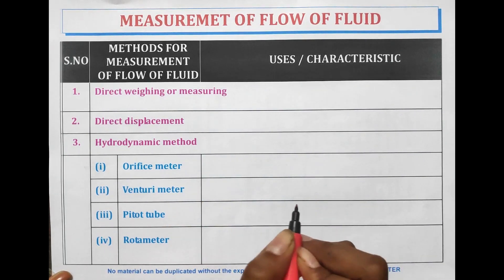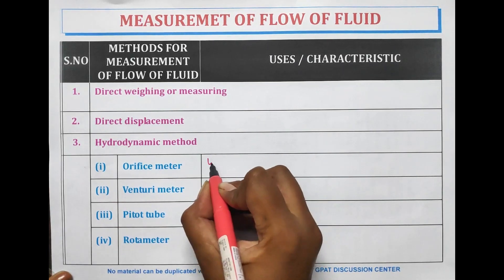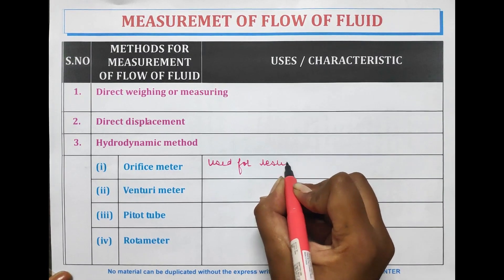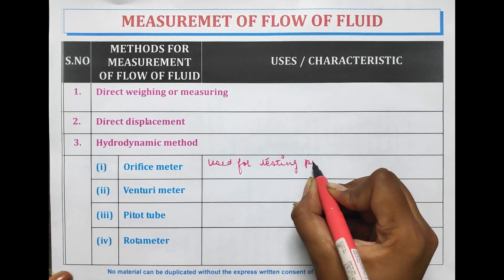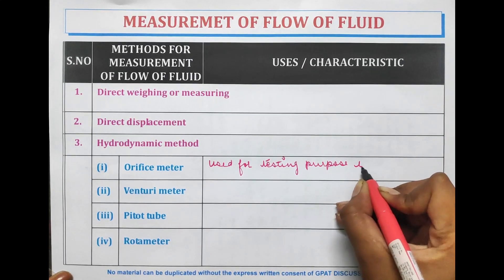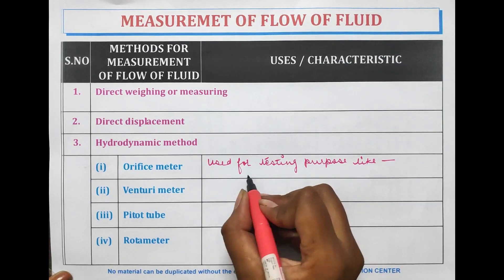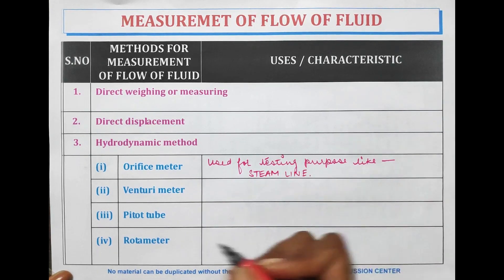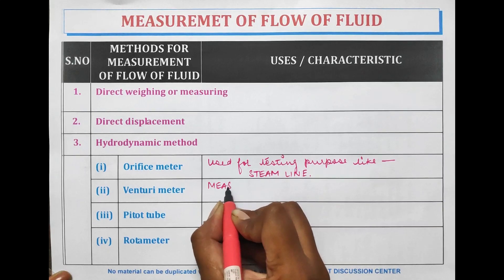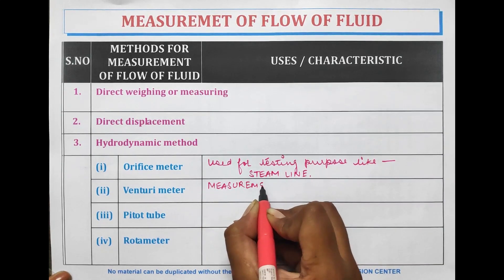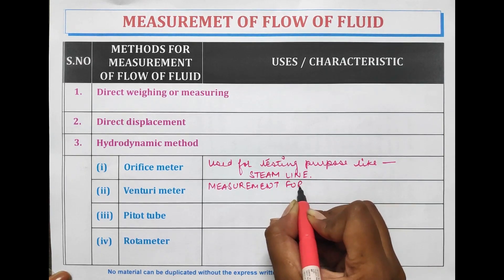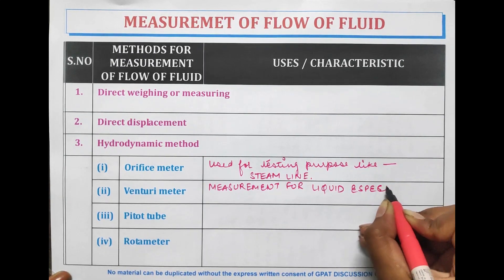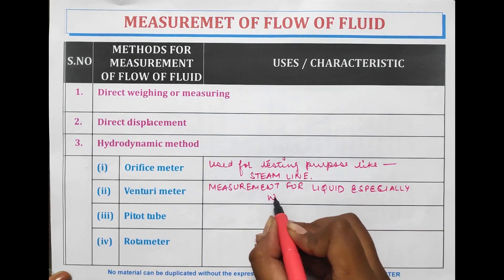The orifice meter is used for testing purposes such as steam lines. The venturi meter is used for measurement of liquids, especially water and gases.